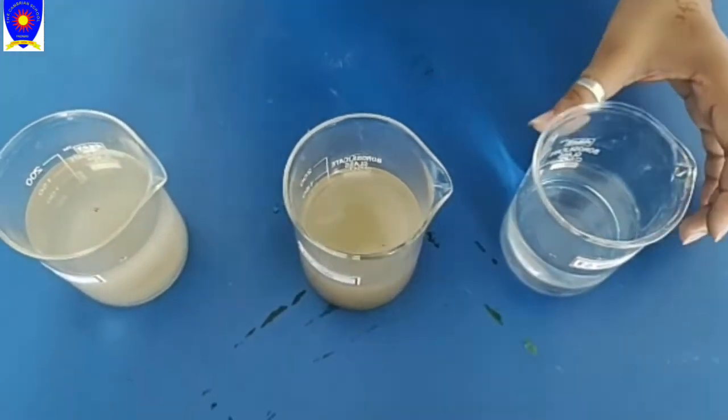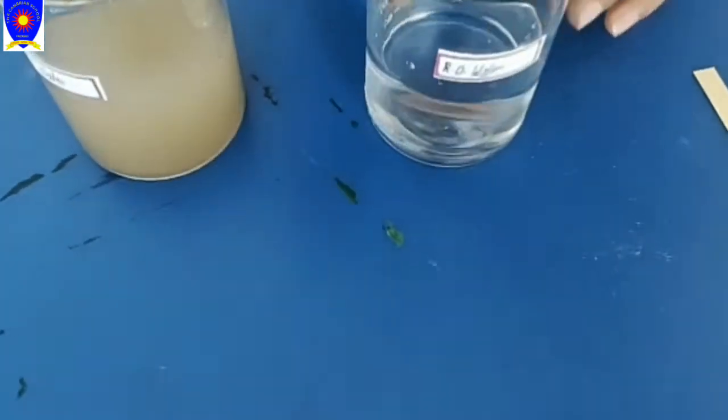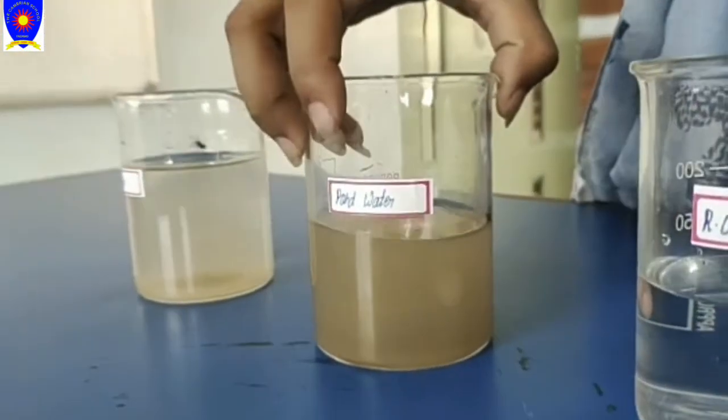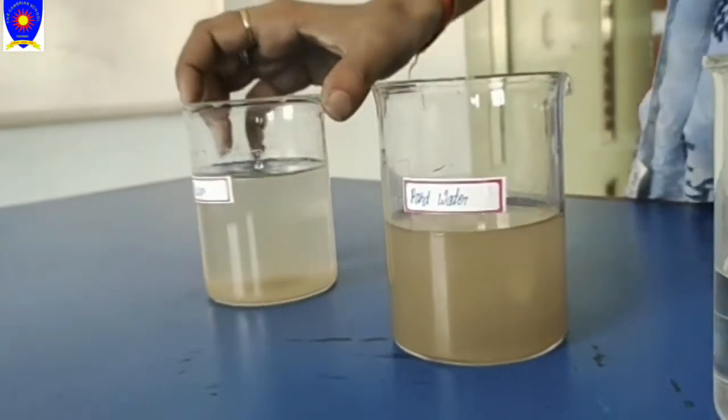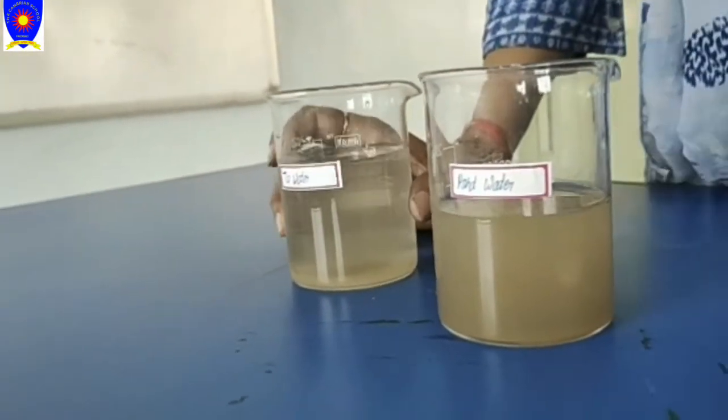So as you can see, the water sample we have taken is RO water, this one is the pond water, and the third sample is tap water.